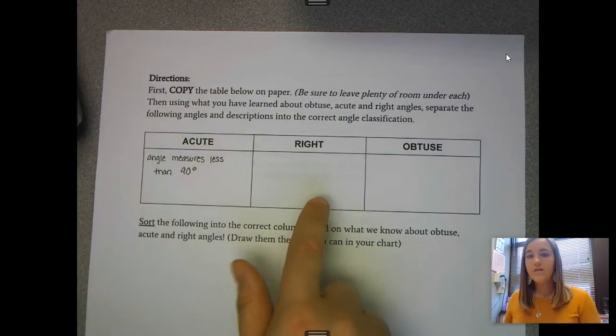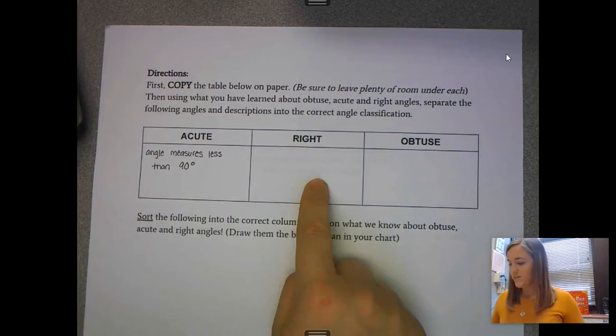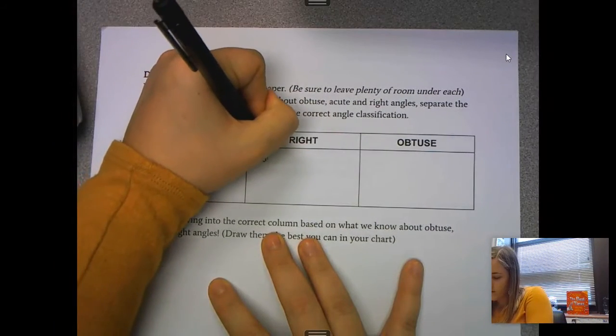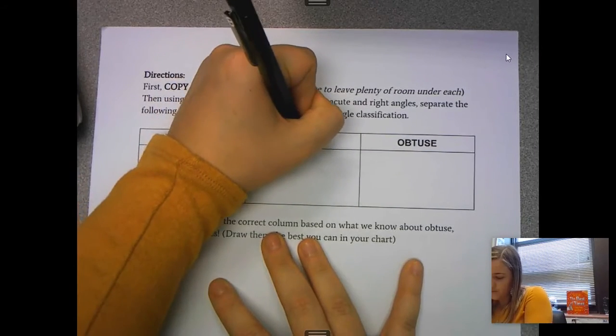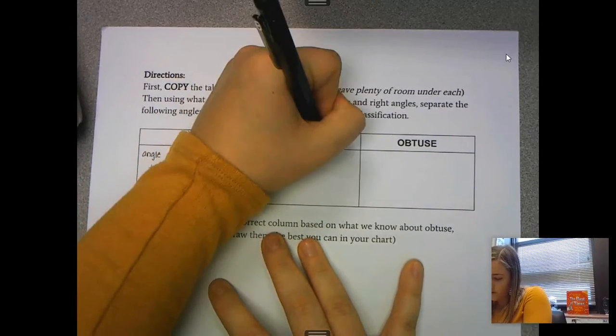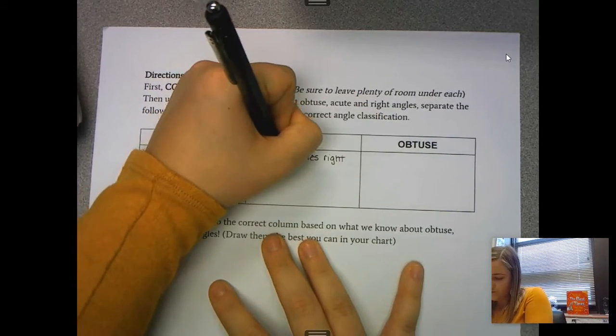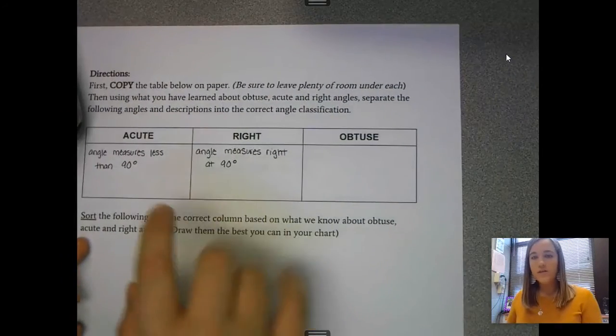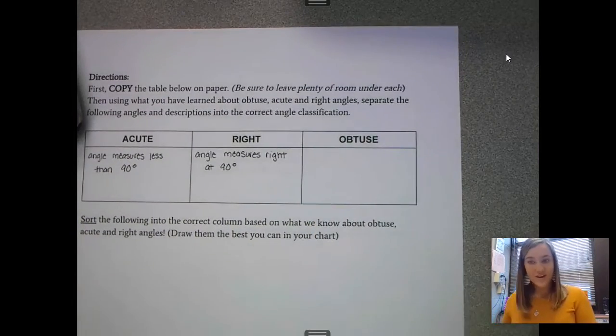And if an angle is considered a right angle, it is measuring right at 90 degrees. And then if we take it to obtuse, that angle is actually measuring greater than 90 degrees.